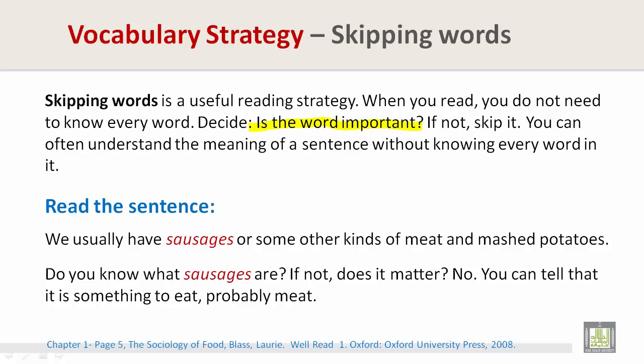Read the sentence: 'We usually have sausages or some other kind of meat and mashed potatoes.' Do you know what sausages are? If not, does it matter? No. You can tell that it is something to eat, probably meat.